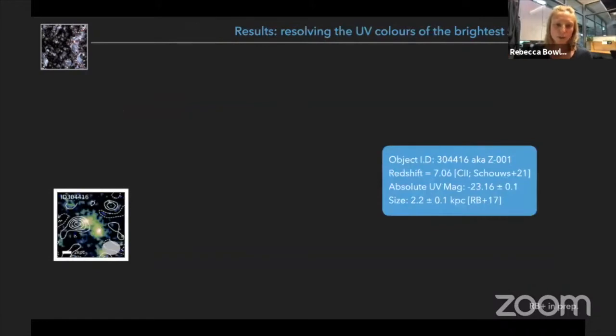Okay, so now I'm going to focus in on this one particular source. So this object is at redshift 7.06, spectroscopically confirmed by Sander, and it's one of the brightest redshift 7 galaxies we know of to date, minus 23 UV magnitude, and it's clearly highly extended in the UV.